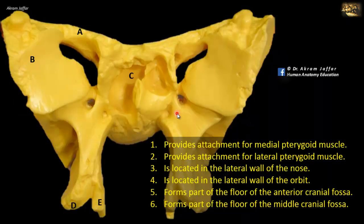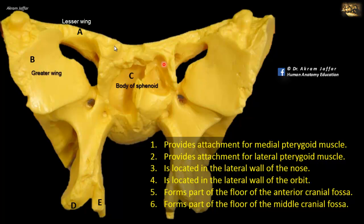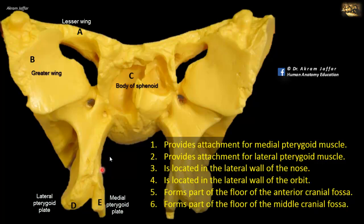We are now required to match the numbers with the lettered items. This is an anterior view of the sphenoid bone. You can see the body of the sphenoid in the middle containing the sphenoid air sinuses — that is C. The sphenoid bone has lesser wings and greater wings: A is the lesser wing, and B is the greater wing, forming the lateral wall of the orbit. D and E are the lateral and medial pterygoid plates respectively.